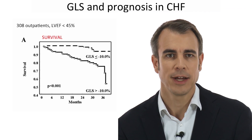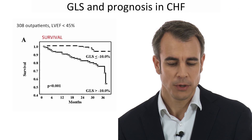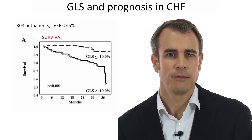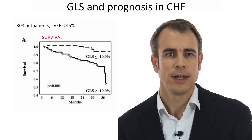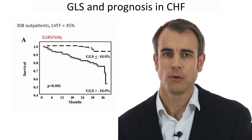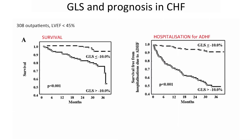Concerning survival, patients with a low strain less than minus 10% have a very bad prognosis, and those with a better strain have a better prognosis. But it's not only about survival — it's also predictive of hospitalization for acute decompensated heart failure. So we can use this technology to get an impression of the overall risk of our patients.